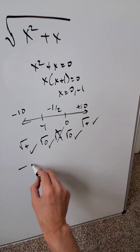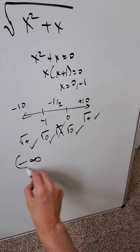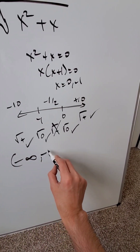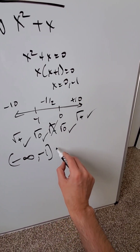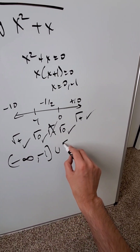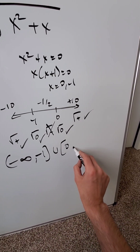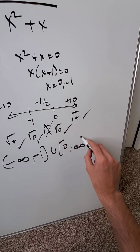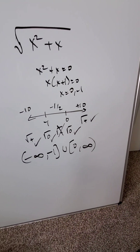So based on this, our domain is minus infinity coming up to minus 1, including it, then jumping across, including 0, and going up to infinity. And our domain is done.